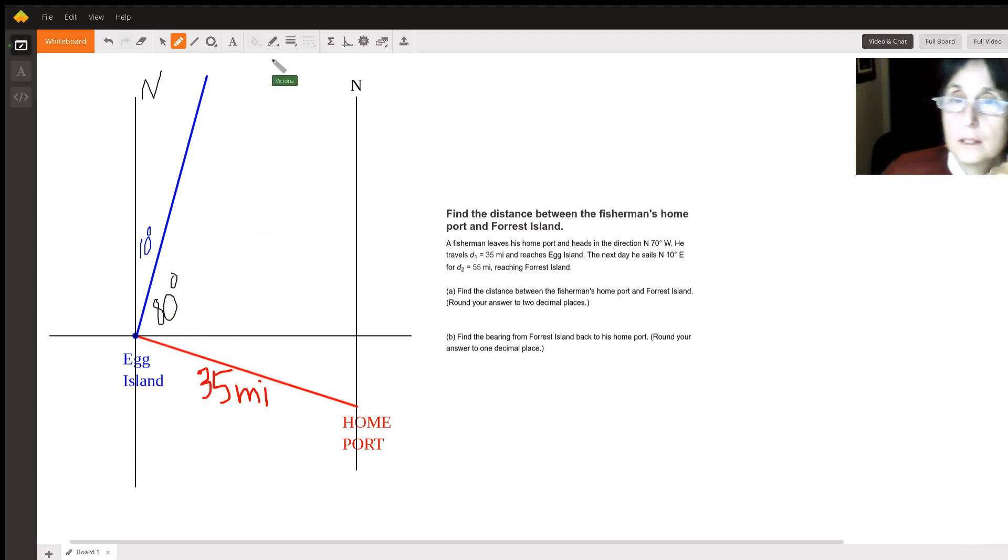Okay. Now what I forgot to write was this is 70 degrees because we started north and we went 70 degrees west, and if I put my east-west line here, well this is 90 degrees, so it makes this little angle 20 degrees.